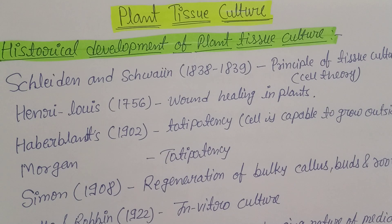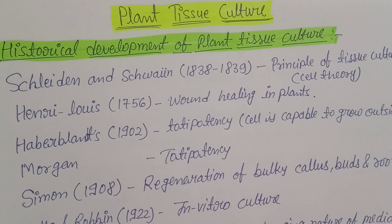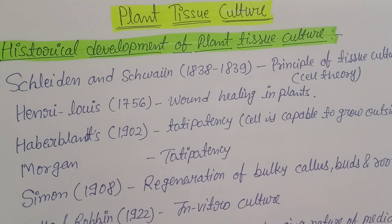Plant tissue culture is not developed today or in the last few years. It has been there from the very beginning, where different scientists gave their own concepts through lots of experimentation and research work. We need to remember their names — they may be German, American, or Indian scientists — along with their time period and what kind of contribution they made. These three things you need to remember.